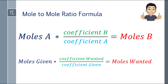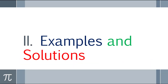The 'given' refers to what's provided in the problem, and you multiply by the coefficient of the wanted — what we're looking for in the problem — over the coefficient of the given. So we are finding the moles wanted, or moles B. Let's go to the examples and solutions.